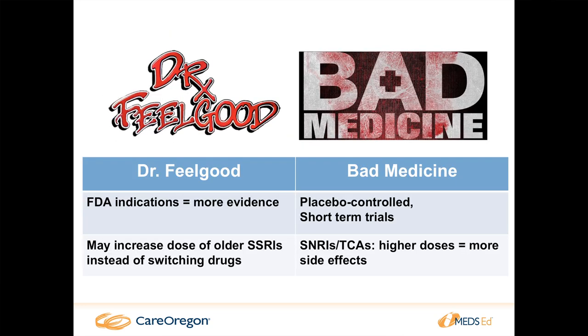The caveat is those studies are usually placebo-controlled and short-term — so can we really extrapolate a 12-week study to several years of use? We may not know. Some older drugs like amitriptyline have very good data but the company may not have sought the official FDA indication. With SNRIs and TCAs, as we get to higher doses, it's not always that bigger is better — we get more side effects without always higher benefit. With the exception of venlafaxine, we do want to get that to a higher dose to achieve the norepinephrine effect.